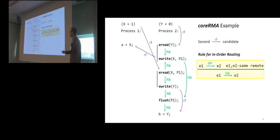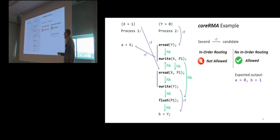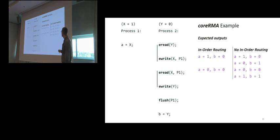And now we apply the rule we saw before, the in-order routing, which orders remote statements that have the same remote process. And we see that if we consider in-order routing, here we obtain a happens before cycle. So for this RF relation, we have two cases. If we have the in-order routing, then this RF relation is not allowed. But if we ignore in-order routing, then it is allowed and the expected output A is 0 and B is 1. If we continue iterating over the read from relations, we will obtain that for this example there are two possible outputs if we take into account in-order routing and four possible outputs without it.